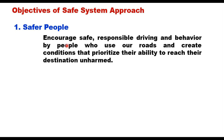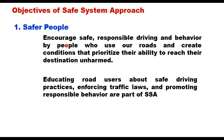There are four major objectives of the safe system approach. The first is safer people. People generally use the roadway system in a safe manner, but mistakes, lapses in judgment, and other risky behaviors still occur. The goal is to encourage safe, responsible driving and behavior by road users and create conditions that prioritize their ability to reach their destination unharmed. Educating road users about safe driving practices, enforcing traffic laws, and promoting responsible behavior are all part of the safe system approach.